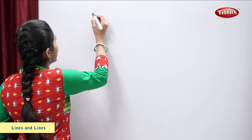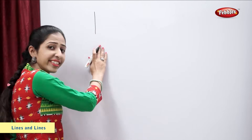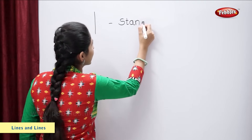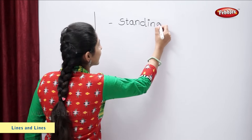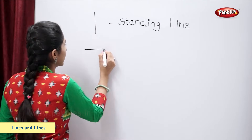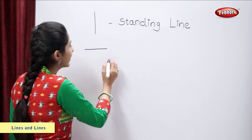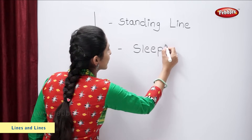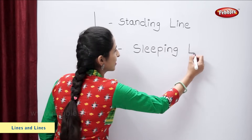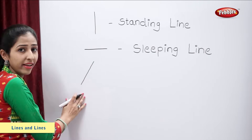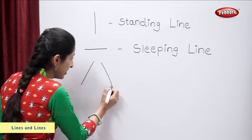Students, now we learn about different types of lines. This is a standing line. This is a sleeping line. This is a slanting line. Even this is a slanting line.